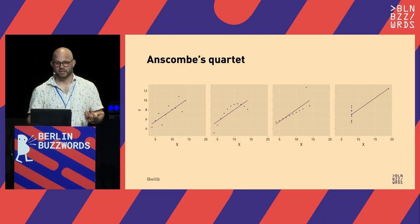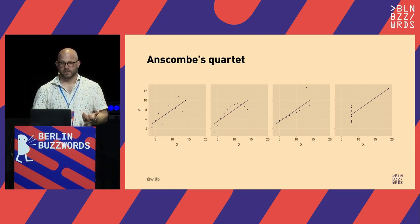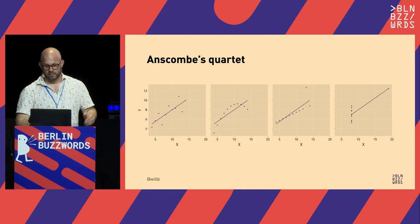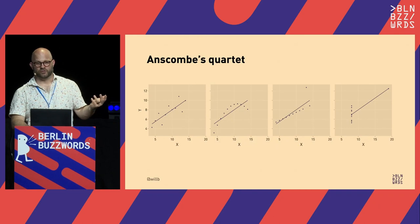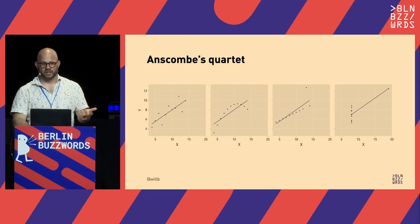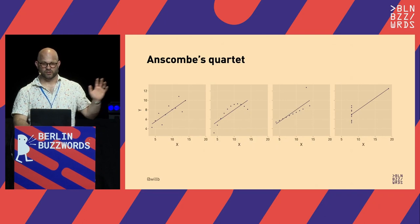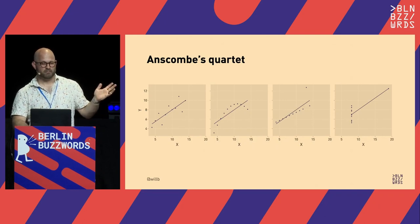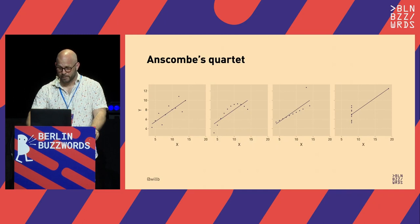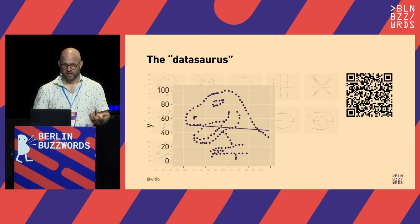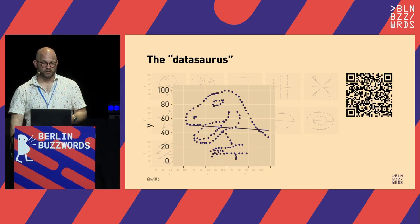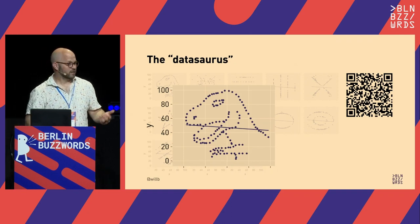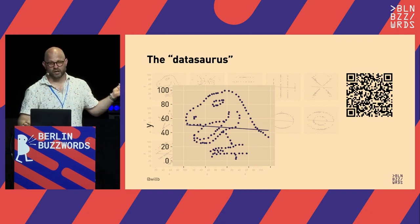If you were just generating data by saying 'I want a dataset that satisfies the same summary statistics,' you could generate any one of these, and it would be modeling something radically different. A more fun example is Alberto Cairo's Datasaurus, which shows the importance of visualizing data. Here we have two features, X and Y, that are both normally distributed with a weak negative correlation.